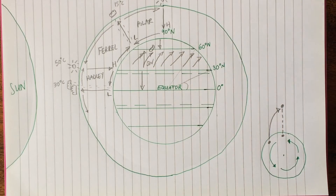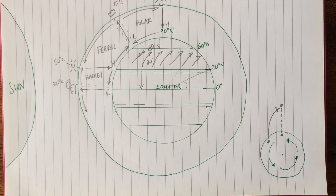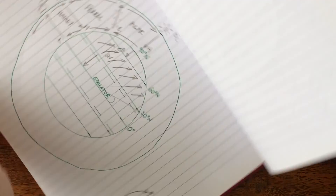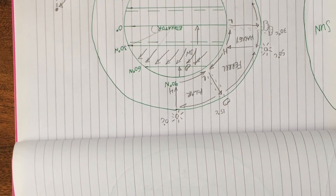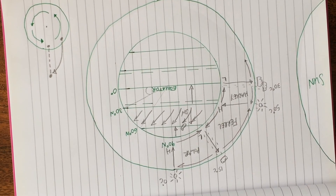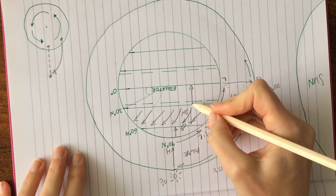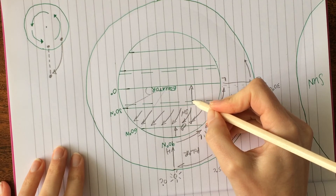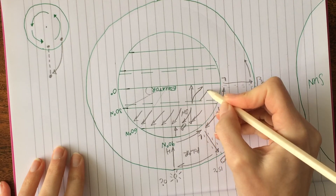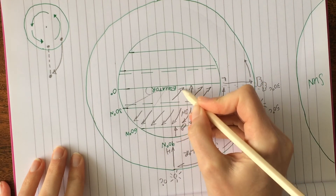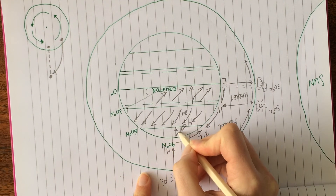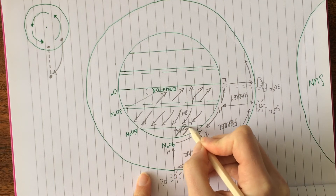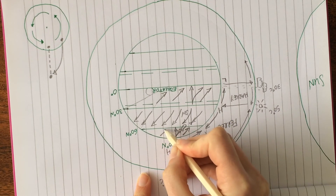The same thing happens with these other arrows here. To explain this I'm going to turn the diagram around — not to confuse you, but to make things a little bit easier. Wind is deflected to the right, so it would actually travel in that direction. The same here at the North Pole — it would be deflected to the right.